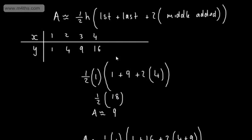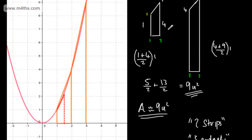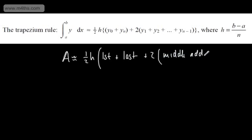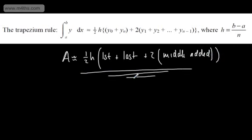Hopefully, that's shown you how the trapezium rule works and why we have two lots of what's left in the middle. To summarise the informal approach: the area is approximately equal to one-half h, where h is the difference in the x-coordinates, multiplied by the first plus the last, plus two lots of the middle ordinates added together. We use the trapezium rule when we're struggling to integrate the function directly.